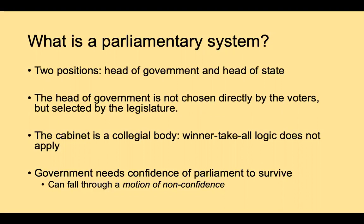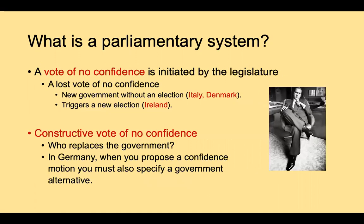The government needs the confidence of parliament to survive. Not only is its election dependent on the legislature, but its continuation in power also depends on the continued support of the parliamentary majority. The government can fall through what is called a motion of no confidence or non-confidence. This is one of the most important parts of a parliamentary system — where parliament can exercise its influence and exert control over the prime minister.